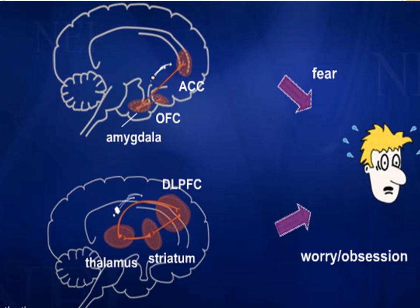Here we have an image depicting the brain areas associated with each of the loops. For the fear loop, we have the anterior cingulate cortex, or the ACC, which is associated with executive function; the orbitofrontal cortex, which is associated with impulse inhibition; and the amygdala, which is associated with strong emotions, especially fear.